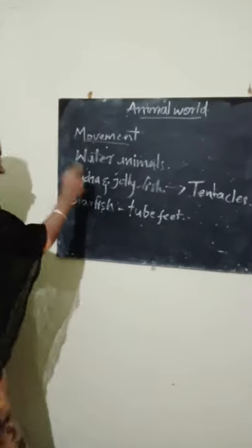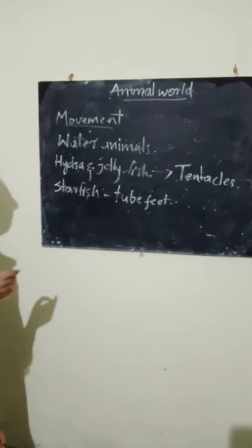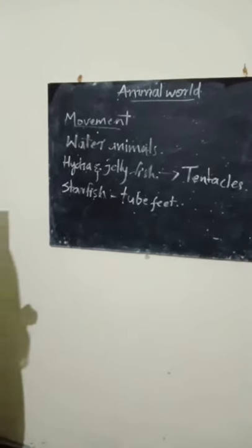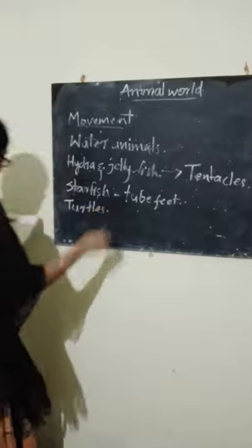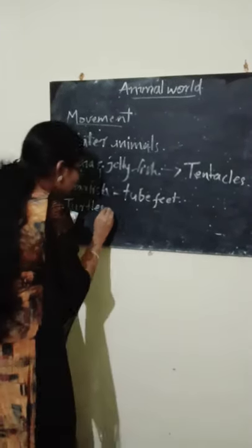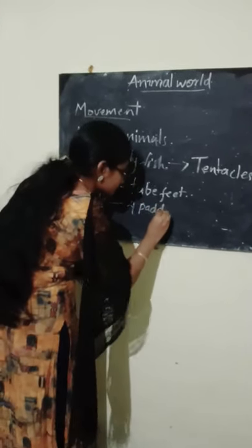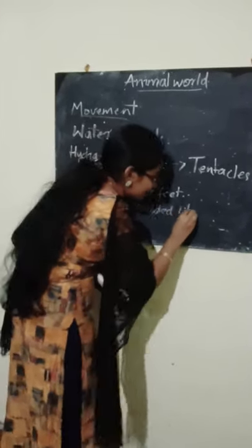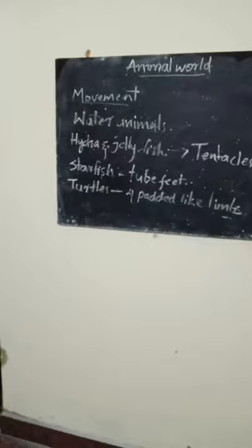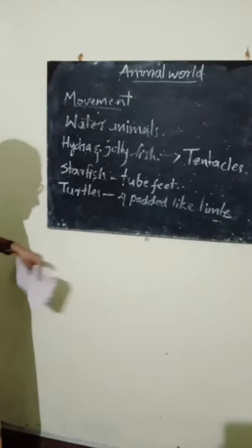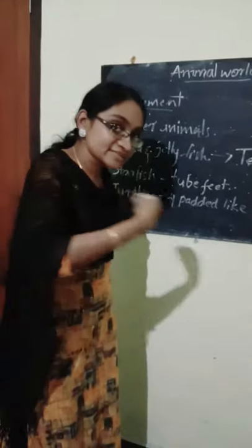So we explained about the fish, then hydra and jellyfish, and then starfish. The next one is turtle. Turtles use four padded-like limbs. They push their limbs in water and move forward — they push their limbs back and they move forward. This is about the turtle.